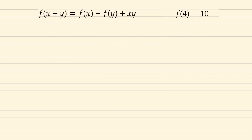To begin this problem we'll start by considering when x and y are both 2. This tells us that 2 lots of f plus 4 must make f which is 10, and so from here we can see that f of 2 is equal to 3.